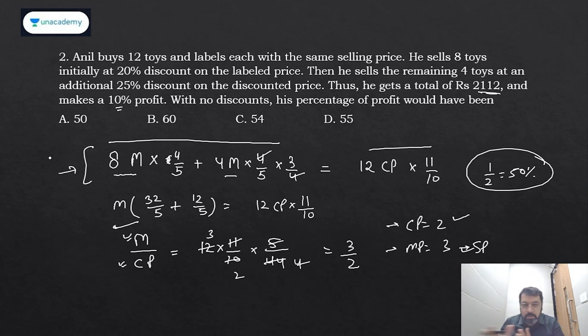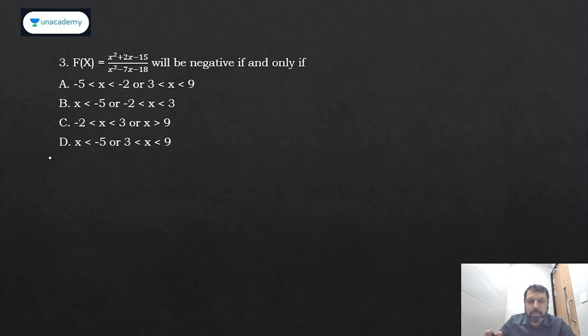Moving on, third question—very easy algebra inequality from CAT 2020. Now these kinds of questions rarely appear but can be there. If it is there, do not try to solve it. Come logically and just eliminate the options. f(x) = this will be negative if and only if... The simplest thing: how we can eliminate the options? Just simply put x = 0.